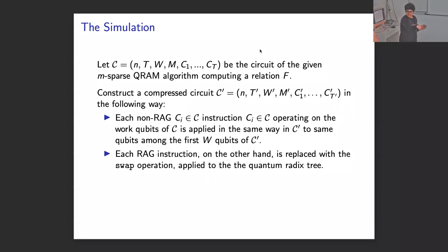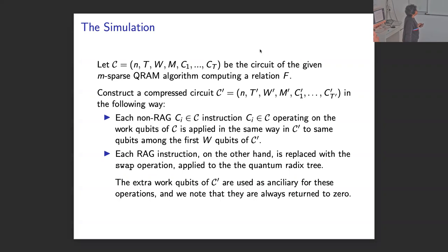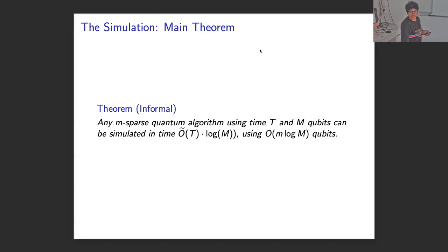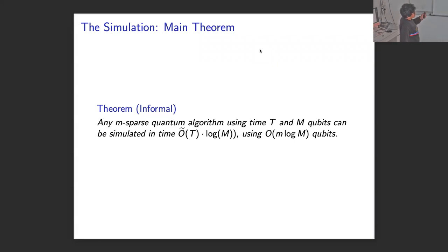We end up getting a new circuit which uses much less memory, because M-dash is just the size of the quantum radix tree, which is going to be m log m instead of capital M. There is also an additional W-dash because of the RAG operation — we sometimes need ancilla to perform operations reversibly. To informally state the theorem: if you have any m-sparse quantum algorithm that uses time T and M qubits, we can simulate that in almost the same time using m log m qubits, which is a big improvement when M is polynomial in m.